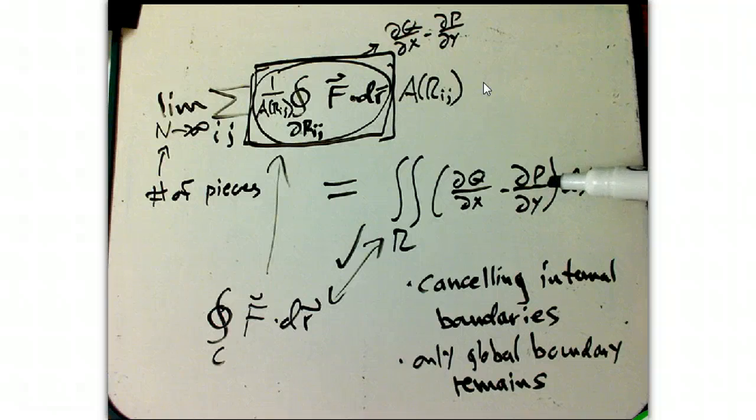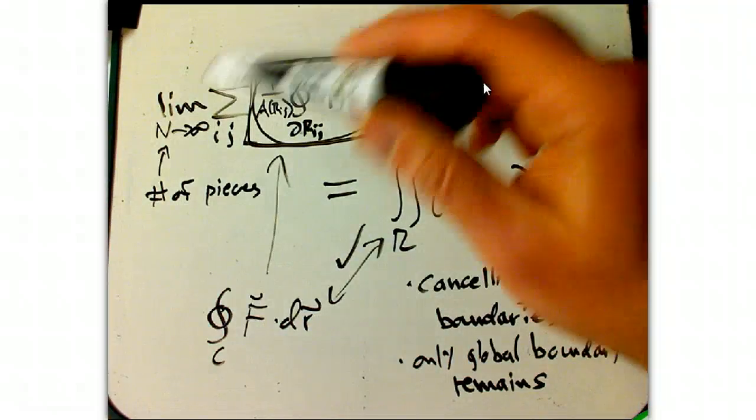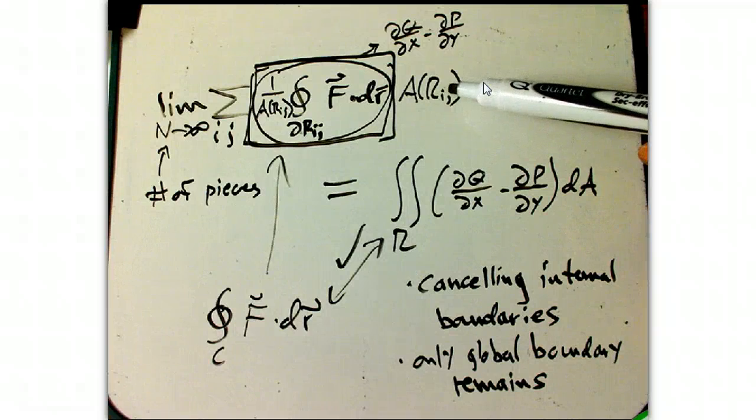That in fact it goes to this, which is really nice. And then that's it. Then you just take the limit and the sum of those, all those local calculations becomes the global calculation.